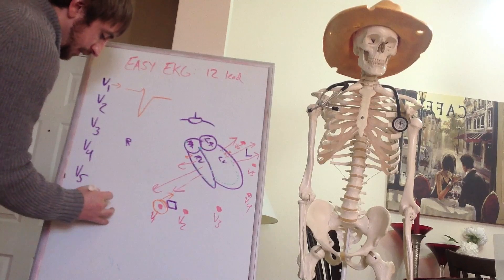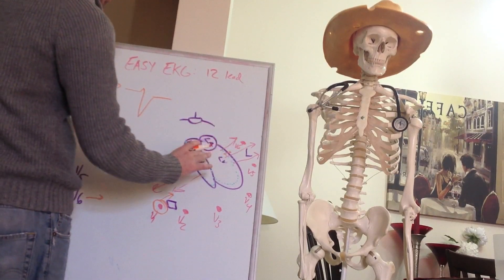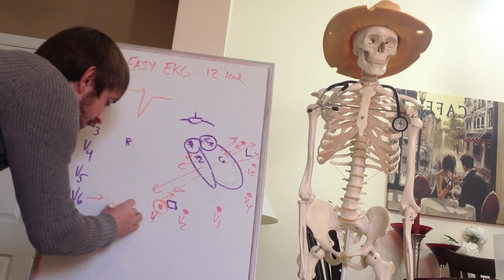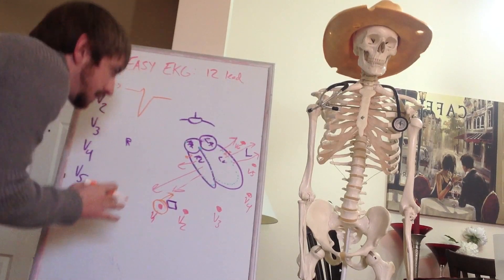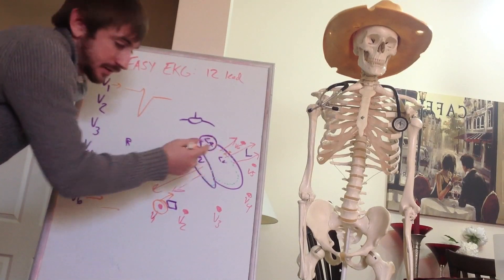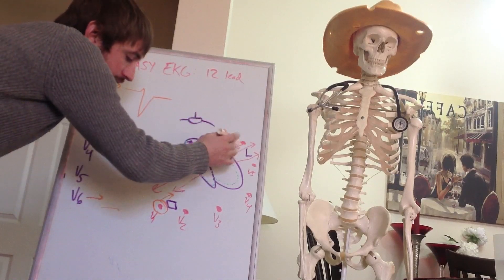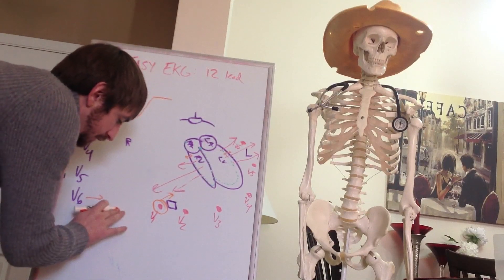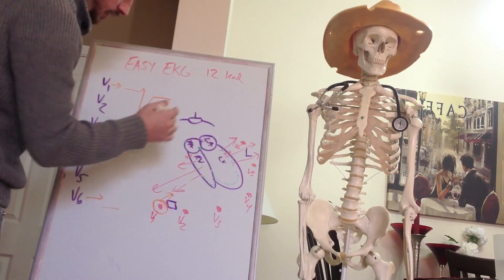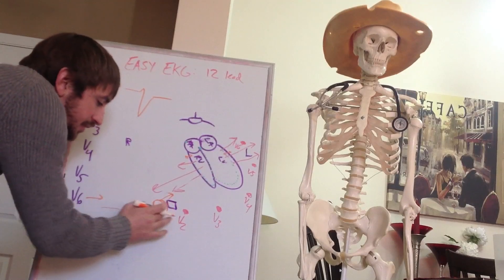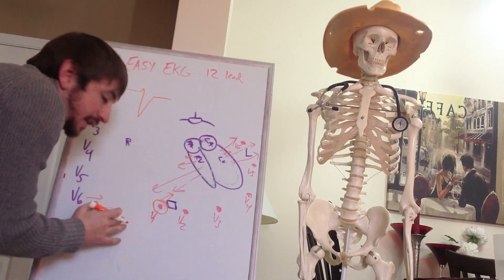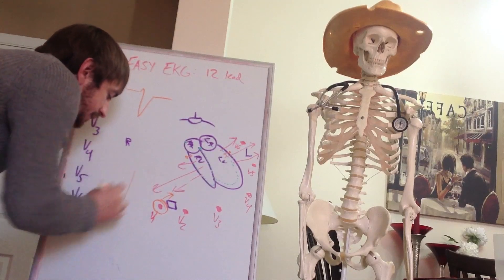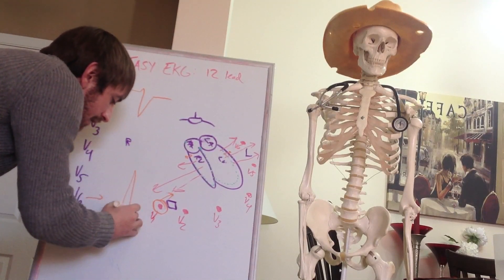Now let's think about V6. Since the initial right ventricular depolarization is going toward V1 and away from V6, we'll have a little initial dip downward at V6. Then, because the left ventricle depolarizes toward V6, we will have a large positive upstroke, and then back down — just like that.